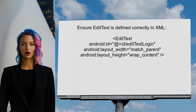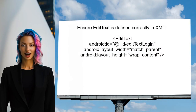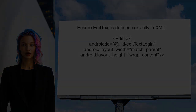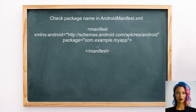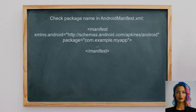Next, verify that the EditText is properly defined in your layout XML file. The ID should be declared as: android:id="@+id/edit_text_login". After confirming the XML definition, check that the package name in the resource name matches the application's package name as defined in the AndroidManifest.xml file.